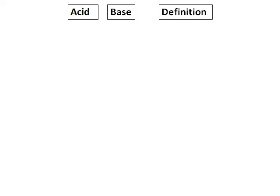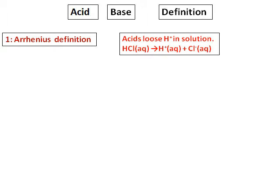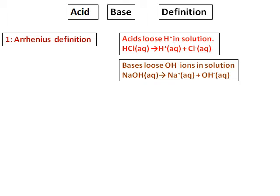Let's start with the definition of acids and bases. The first definition is the Arrhenius definition. Arrhenius defined acids as substances which lose hydrogen ions in solution. For example, HCl gives H⁺ and Cl⁻, making HCl an acid. Arrhenius defined bases as substances which lose hydroxide ions in solution — for example, sodium hydroxide, which gives OH⁻ ions in solution.